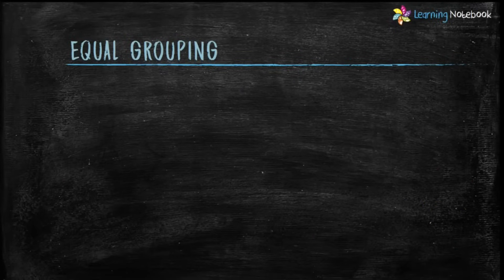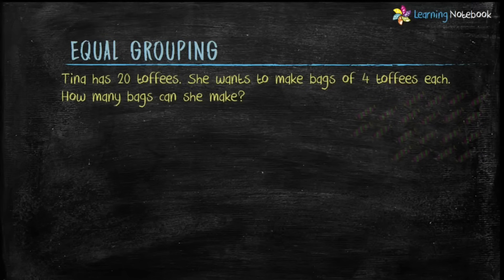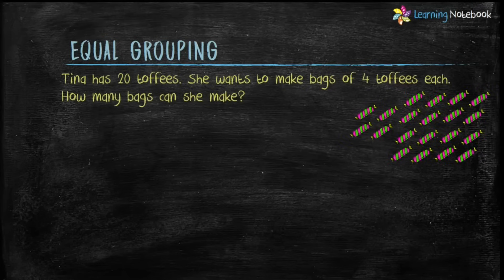Now let's see what is equal grouping. Tina has 20 toffees. She wants to make bags of 4 toffees each. How many bags can she make?